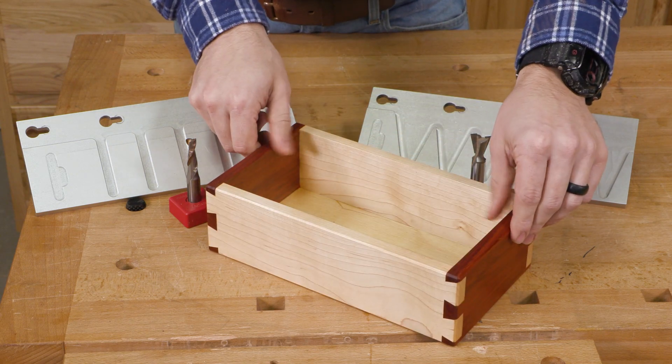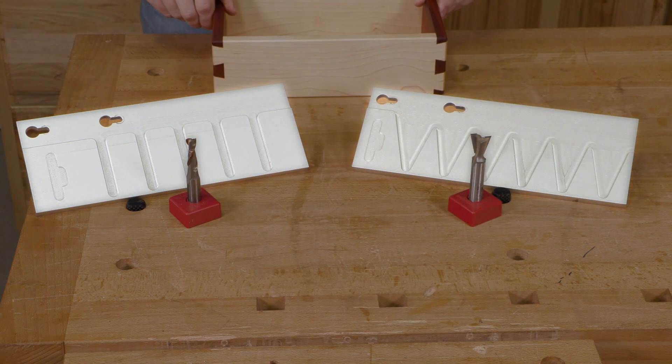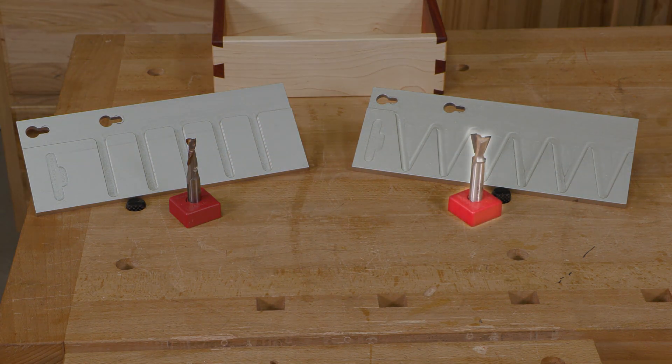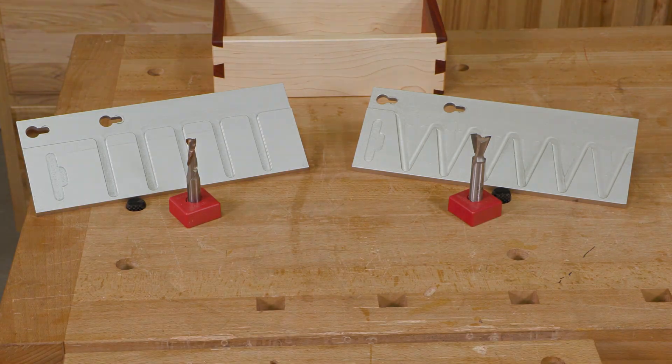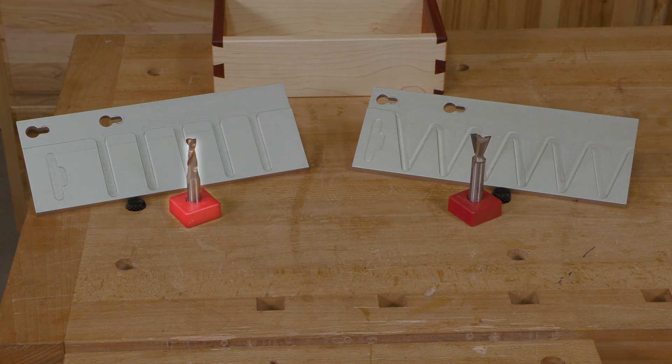To create this dovetail joint, you'll need a ¾ inch dovetail template set, a ¾ inch 14-degree dovetail bit, and a ¾ inch spiral upcut router bit.